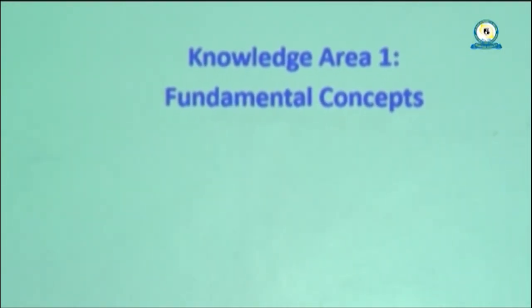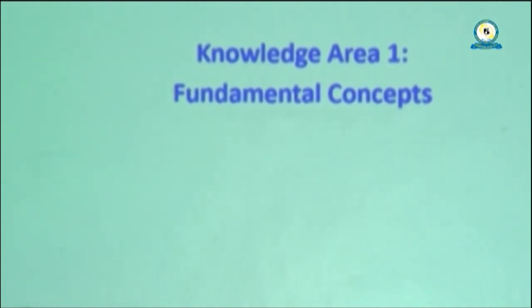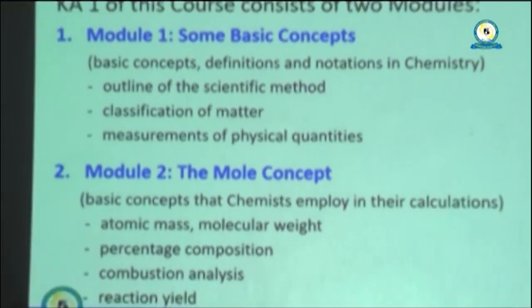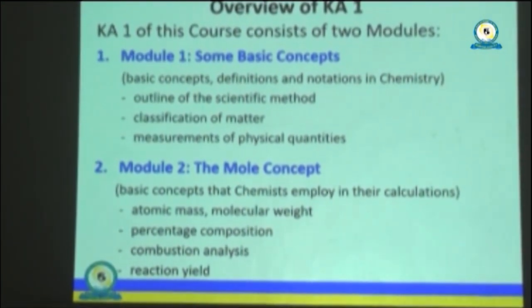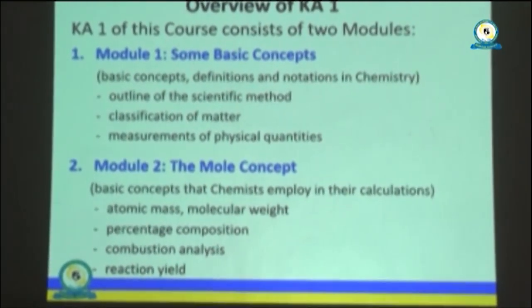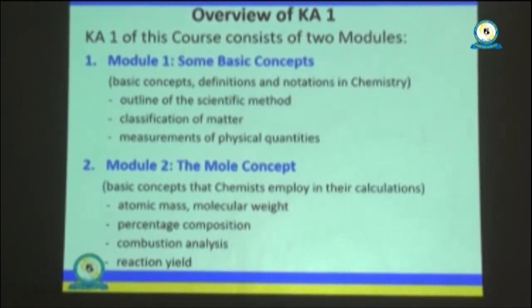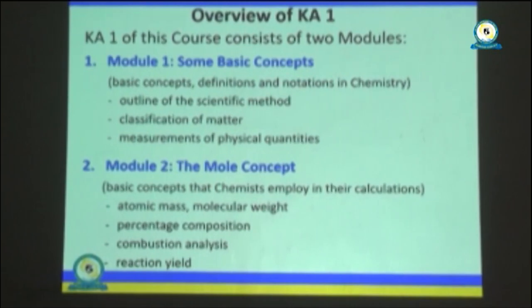This area is mostly revision from your lower level of education, and most of the concepts you must have learned and covered in your previous levels. Under this knowledge area we have two topics or modules. The first one is basic concepts, which introduces some definitions and notations in chemistry, including the outline of the scientific method, classification of matter, and measurements for physical quantities. The second module is molar concepts, which deals with some basic calculations that chemistry employs, including atomic mass, molecular weight, percentage composition, combustion analysis, reaction yield, and so on.